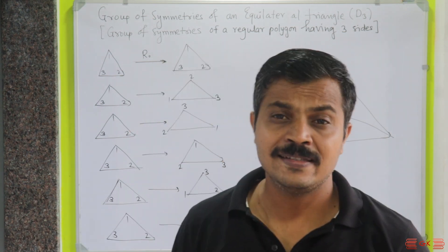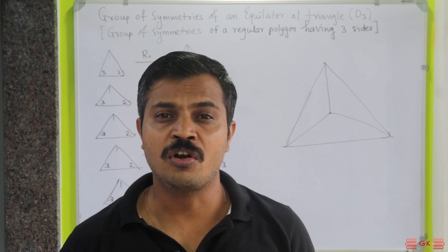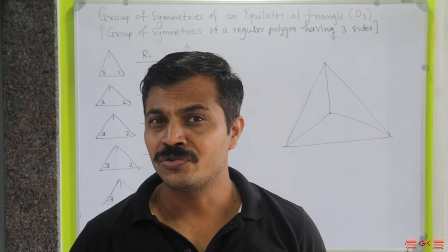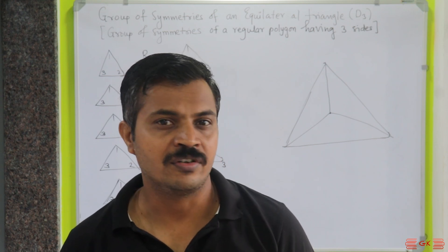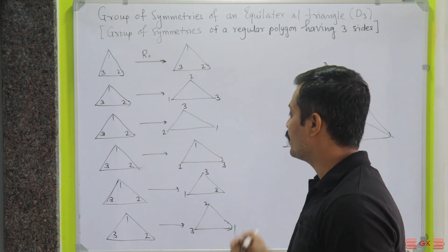Now, as discussed previously, finding symmetries is not that difficult. We have already found them for the square, so the same thing can be done for the equilateral triangle, and you can find that we get these six symmetries.